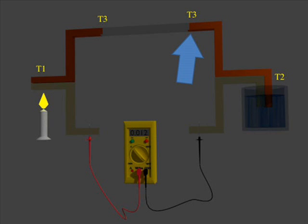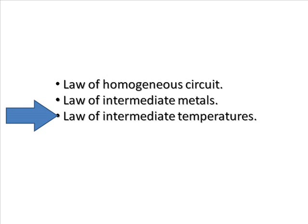If T3 is the temperature of both new junctions and T1 and T2 are the temperatures of hot and cold junctions respectively, now again take the reading of the multimeter. In these two cases you will see the multimeter reading is the same, which proves the thermocouple law of intermediate metals.